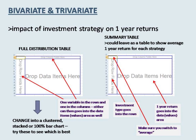Moving on to the bivariate and trivariate section. Since this is a large section, it is nice to have a couple of sentences for the first subsection — maybe something just to set the scene and refocus the reader, such as: in this section, several potential factors that may influence the one year return performance of superannuation funds will be considered.